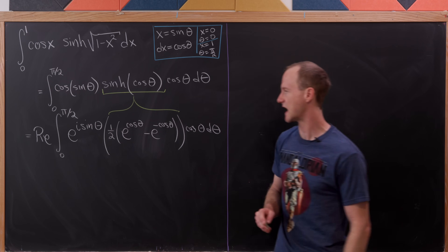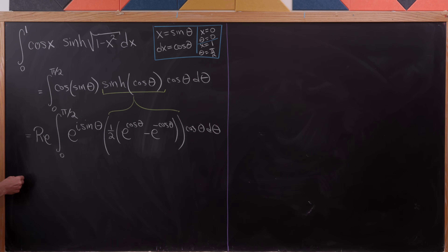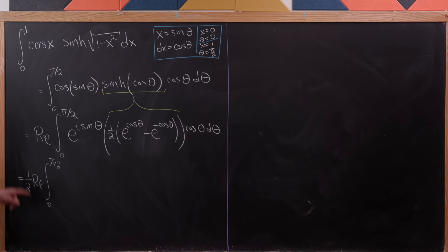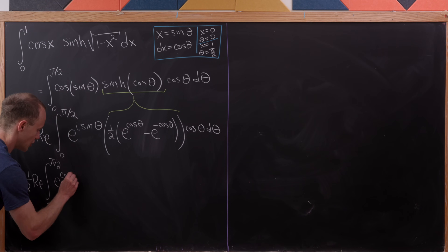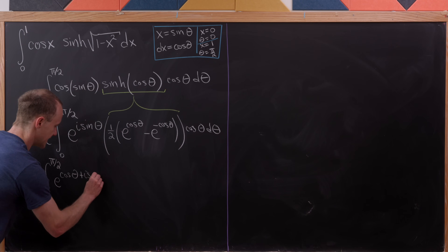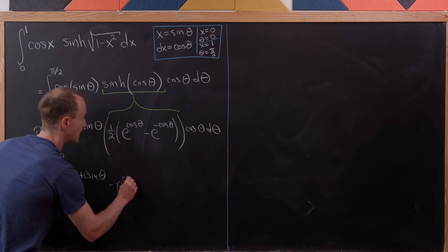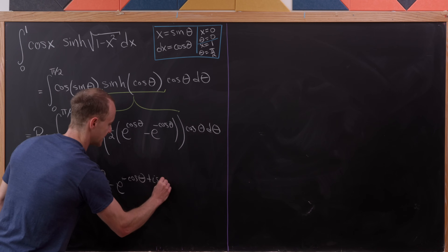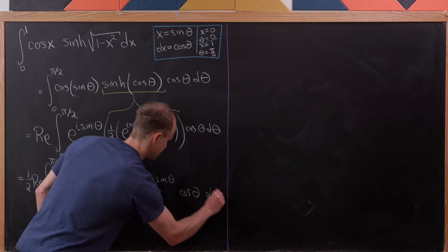We combine the exponential functions and bring the one half out front, giving us one half times the real part of the integral from 0 to pi over 2 of e to the cosine theta plus i sine theta, minus e to the minus cosine theta plus i sine theta, times cosine theta d theta.